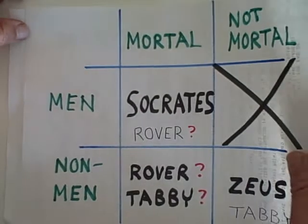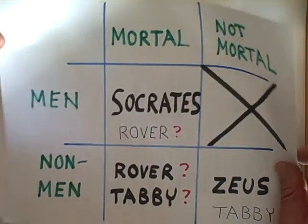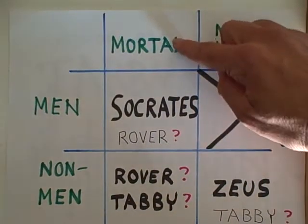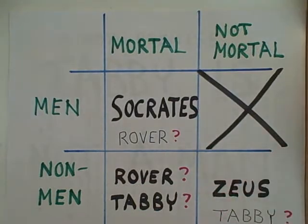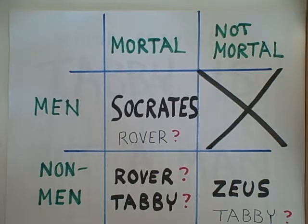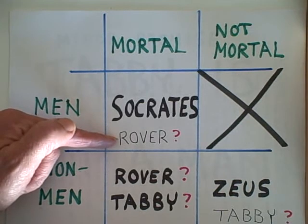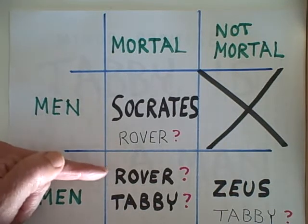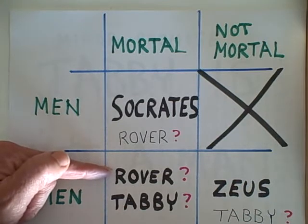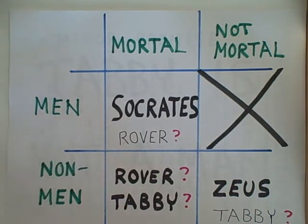Let's try some minor premises that will not yield valid conclusions. Rover is mortal. We know that Rover is in the mortal column, but we really don't have enough information to know where to put Rover. Is Rover another name for a man — is he Socrates' friend? Or is Rover a non-man, a dog? Both men and dogs are mortal. We don't know how to classify Rover from the information given.